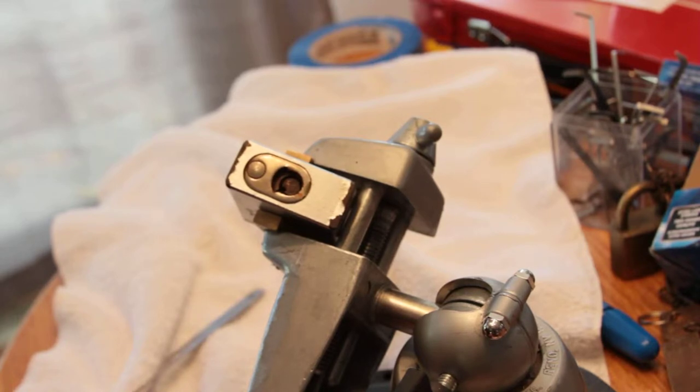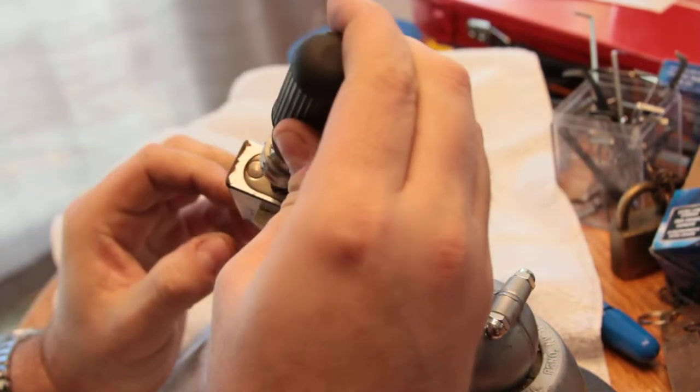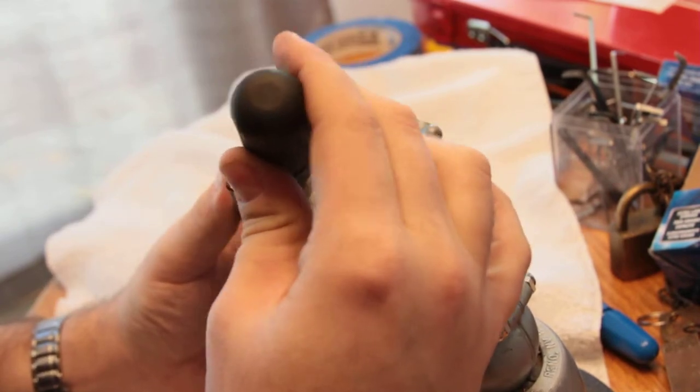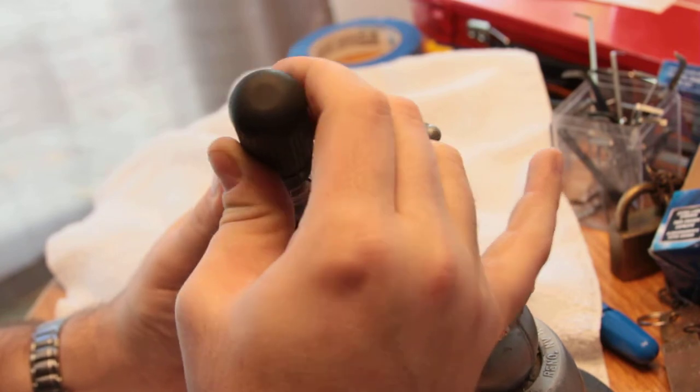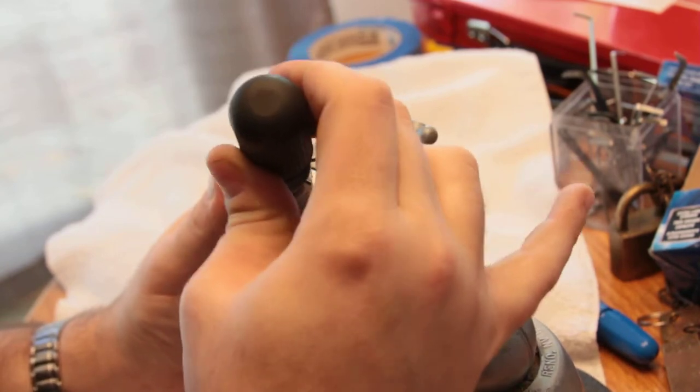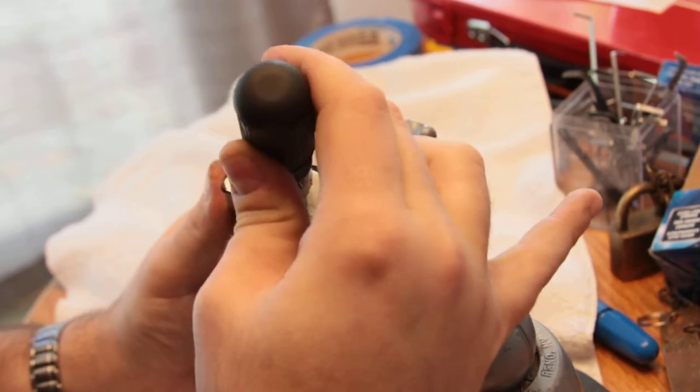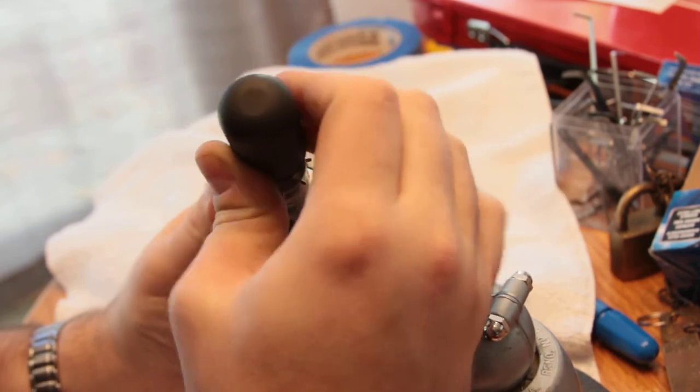We'll start with fairly light tension. One thing I don't know about this lock is how much tension it's going to take to get it to turn. Normally you kind of jiggle these with a light twisting motion, but this guy might want a little bit more depending on the spring.